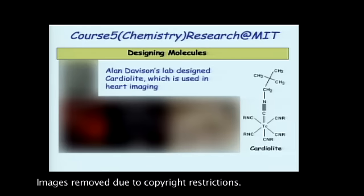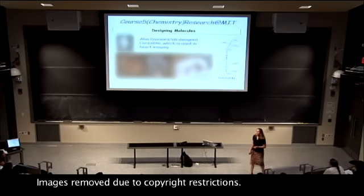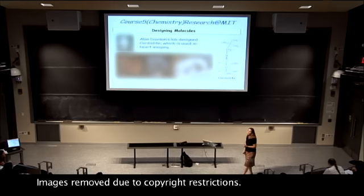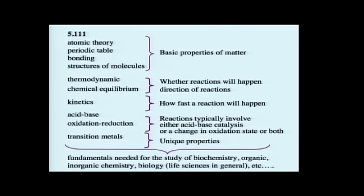My final example is from Alan Davison's lab. Alan is an inorganic chemist. He loved those transition metals and their unique properties. He designed this compound that's called Cardiolite, and it's used in heart imaging. Many people have relatives that have had to have their heart imaged. Heart disease is a major problem in the United States. There's a good chance that they had Cardiolite given to them to help in that imaging process. This takes advantage of those great unique properties of transition metals, which we'll talk about in this course. All together, this is the basis for modern chemistry. The examples I just gave you were some of the things that modern chemists are working on, some of the issues that our country faces and our world faces, and how chemistry is involved in that.